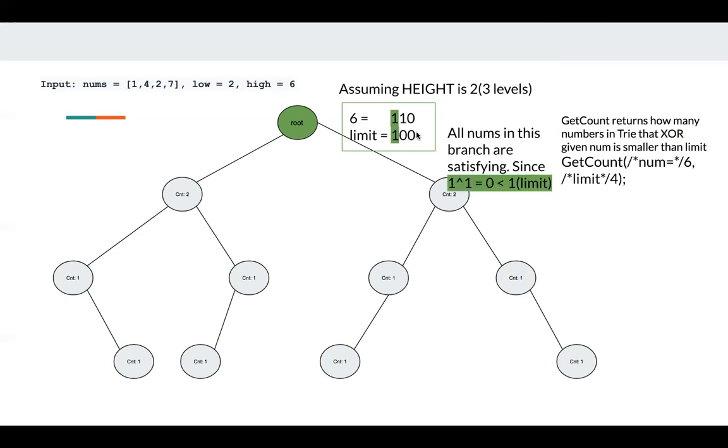We know that this bit is 1 here. The bit of 6 is also 1 here in green. So if we choose the right part, which means those numbers that have bit 1, we know 1 XOR 1 is 0, which means all these numbers in this branch are smaller than limit since the bit of the limit is 1.